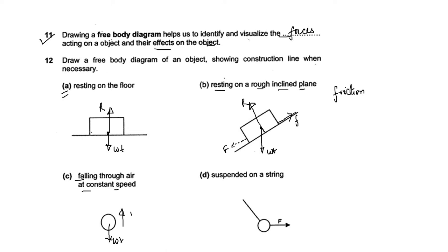Next question: suspended on a string. When it is suspended on a string, the force acting is tension. Another force acting is weight, which is always downward, written as W. And the tension T acts upward. This is the free body diagram for all these objects.